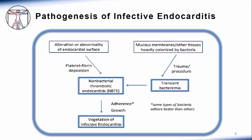The development of infective endocarditis is highly dependent on the microorganism's ability to adhere to the nonbacterial thrombotic endocarditis, or thrombus, lesions. For example, staphylococci and enterococci adhere much more readily to cardiac valves than gram-negative rods such as E. coli, and therefore staph and enterococci are much more common causes of infective endocarditis.